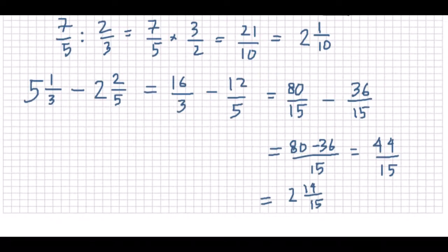Next example, we have a subtraction: 5 and 1 over 3 minus 2 and 2 over 5. The first fraction can be written as 16 over 3 and the second as 12 over 5. Because they have different denominators — 3 and 5 — we find the common denominator, which is 15. So the first fraction becomes 80 over 15 and the second becomes 36 over 15. Hence 80 over 15 minus 36 over 15 equals 44 over 15, or as a mixed fraction, 2 and 14 over 15.